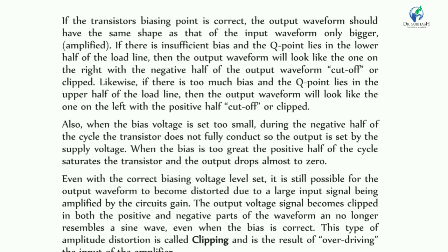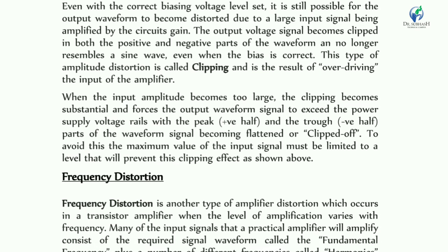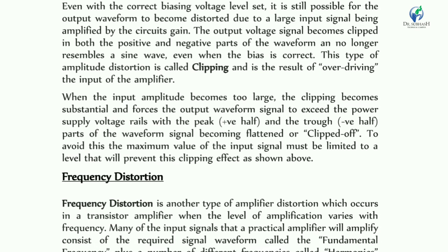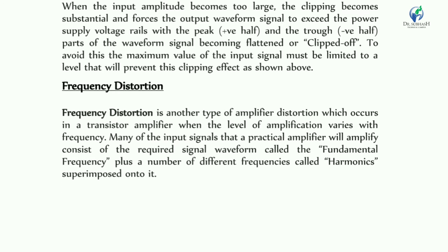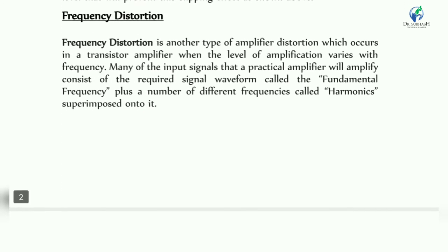Frequency distortion: When we look at amplitude distortion, the positive half of the signal's peak is cut off. Similarly, the negative cycle can also be cutoff. Now, when we consider frequency distortion, we examine how the frequency of the signal behaves.